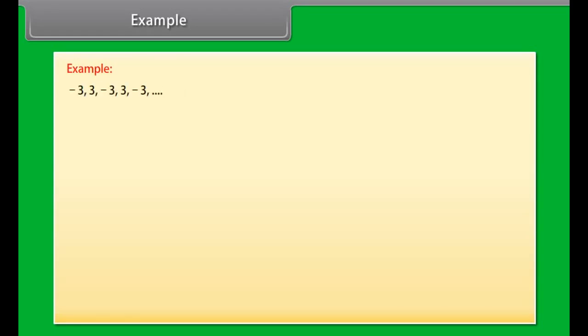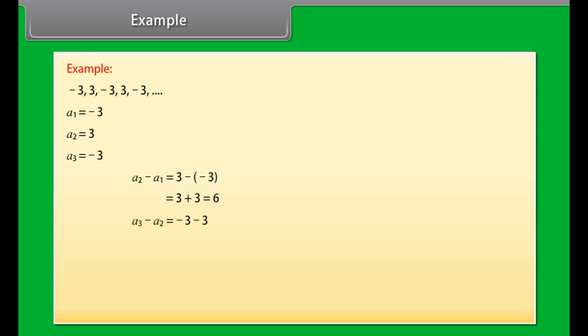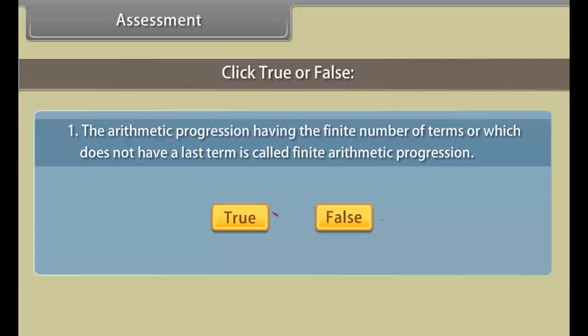Let us now solve an example. Observe this sequence and find out whether these numbers form an AP or not. Here A1 = −3, A2 = 3, A3 = −3, and so on. A2 − A1 = 3 − (−3) = 6. But A3 − A2 = −3 − 3 = −6. Since A2 − A1 is not equal to A3 − A2, the given sequence is not an arithmetic progression.